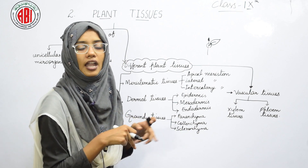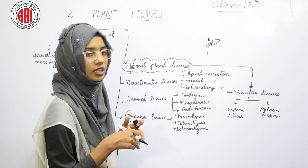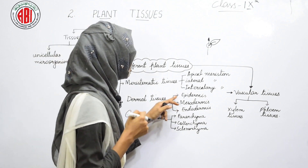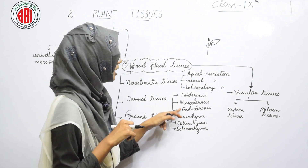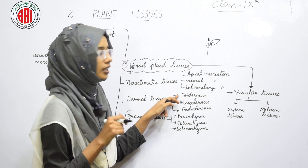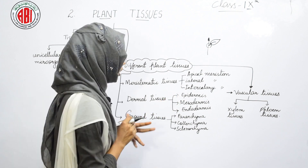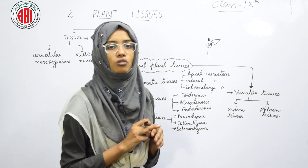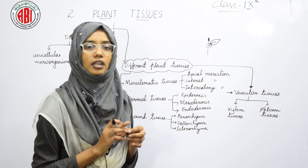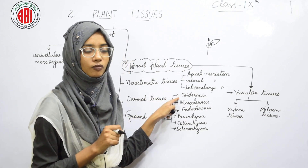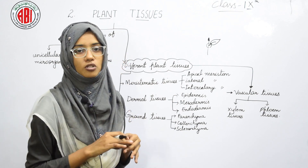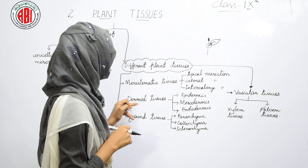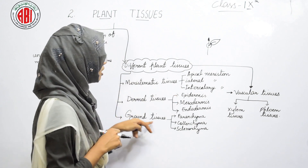Dermal tissues show three layers: epidermis, mesodermis, and endodermis. The outermost layer is the epidermis, the middle layer is the mesodermis, and the innermost layer is the endodermis. The epidermis of the leaf shows pores called stomata, responsible for the exchange of gases. The epidermal cells of the roots have root hairs that help in the absorption of water and minerals.